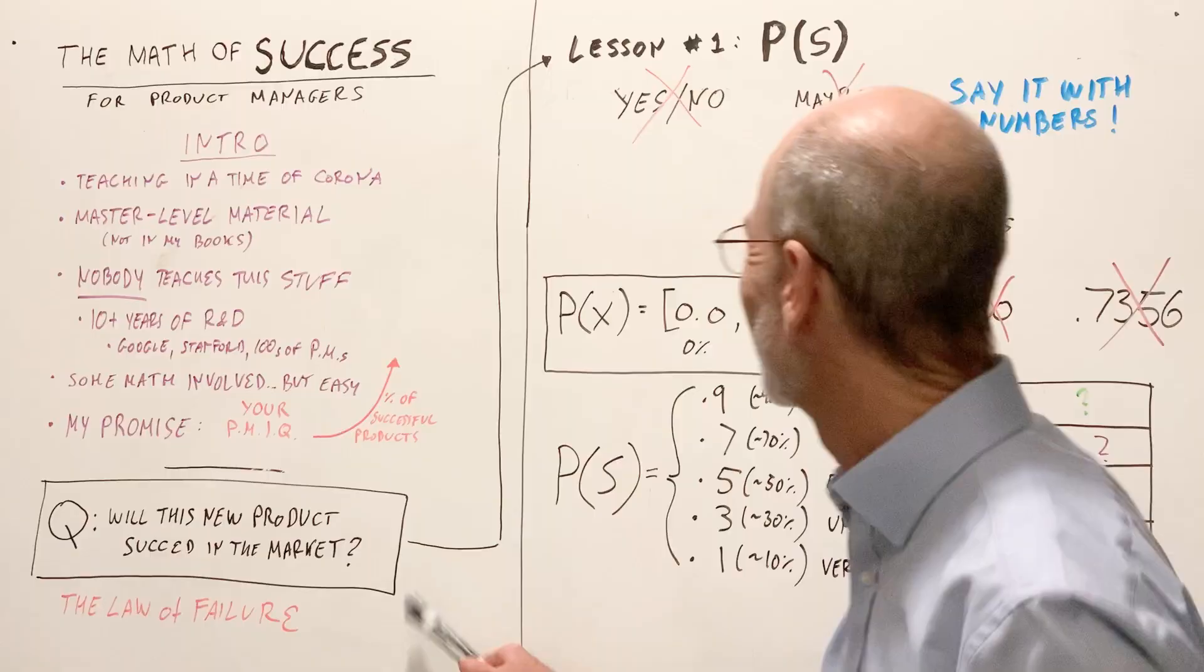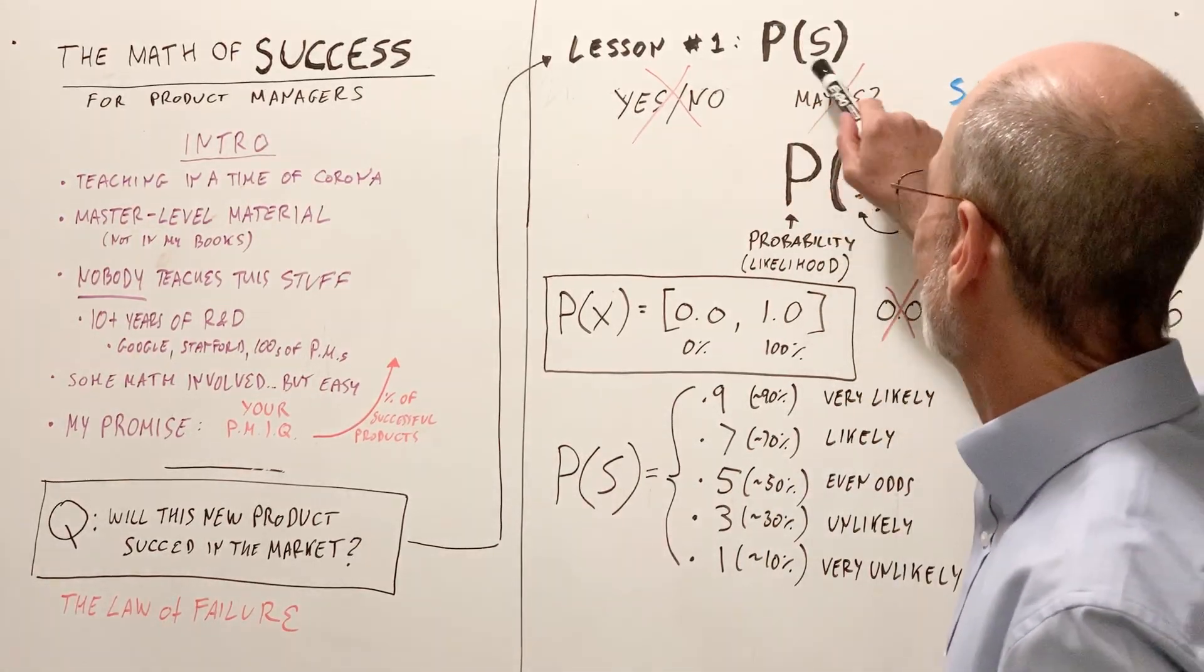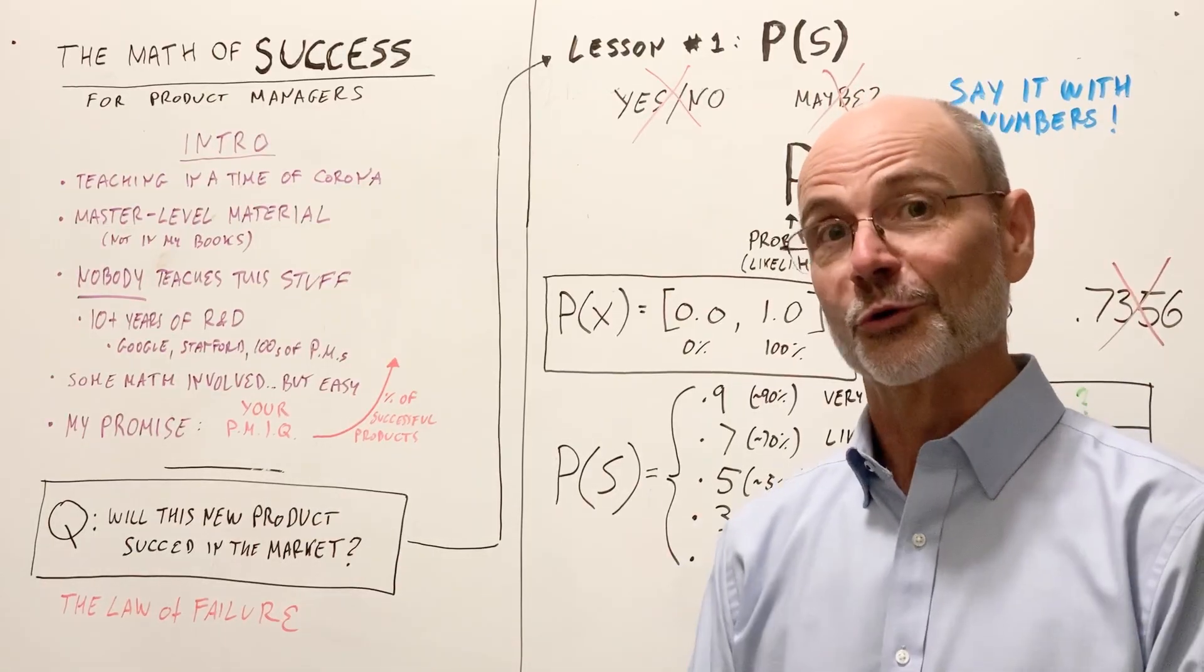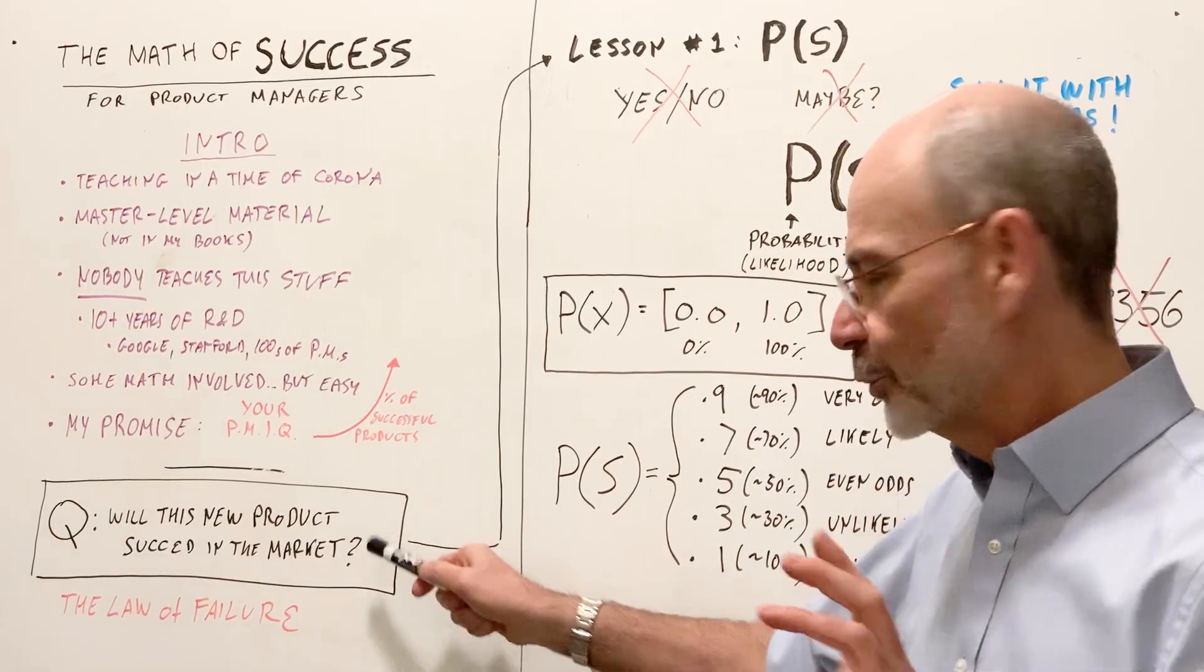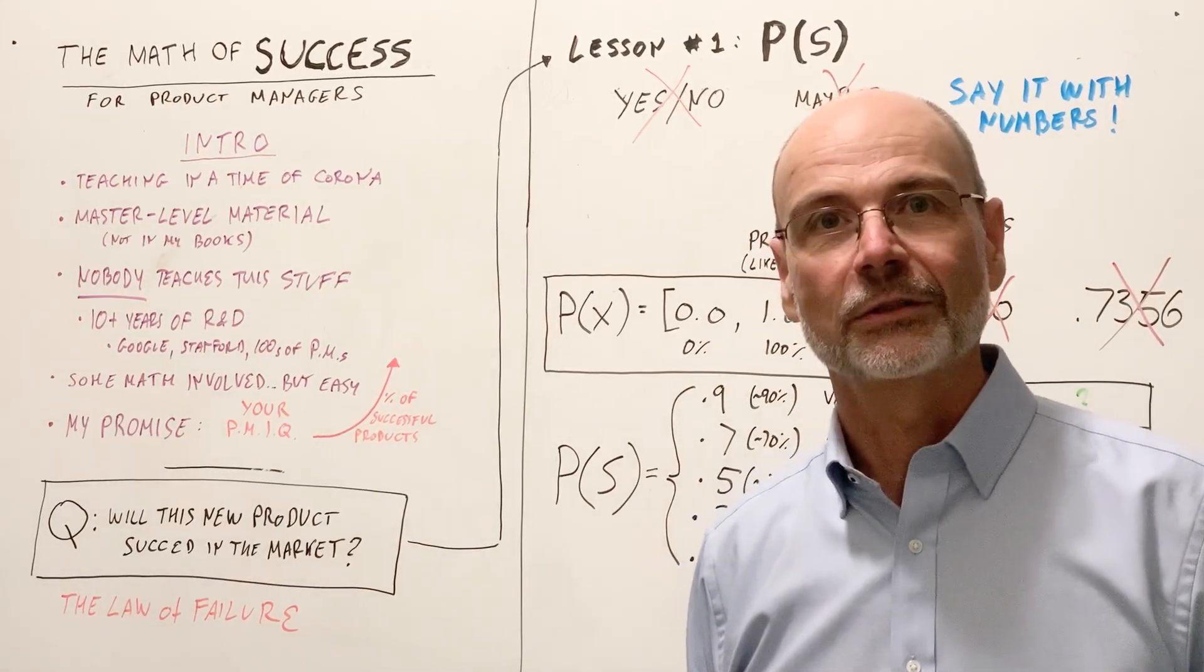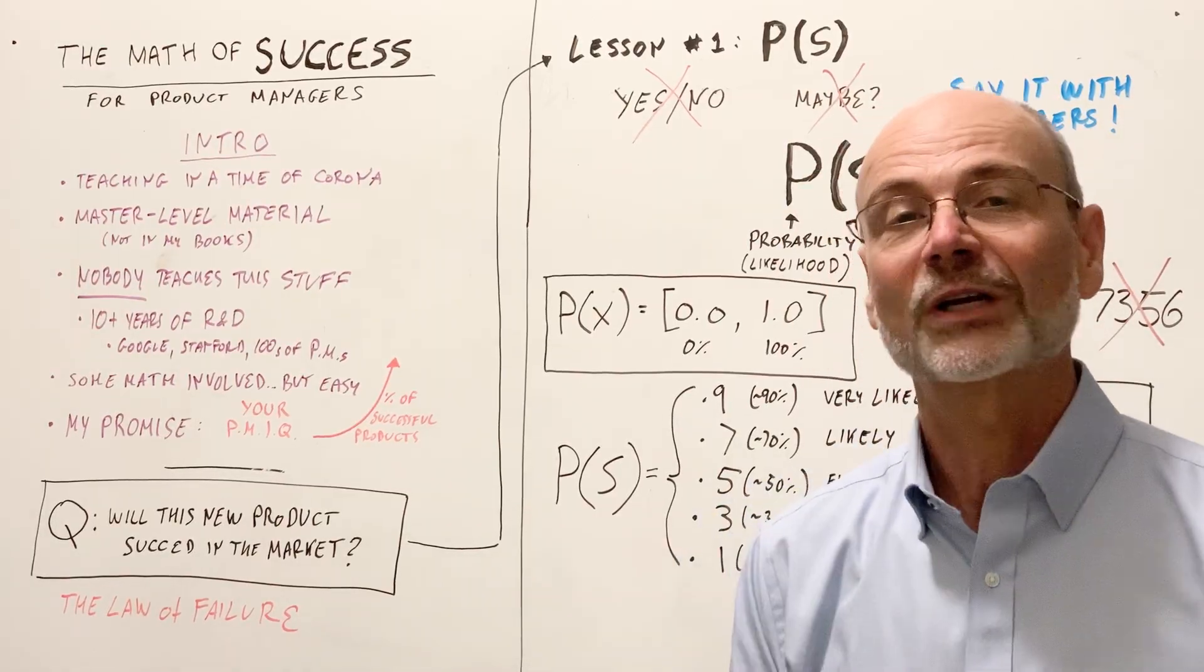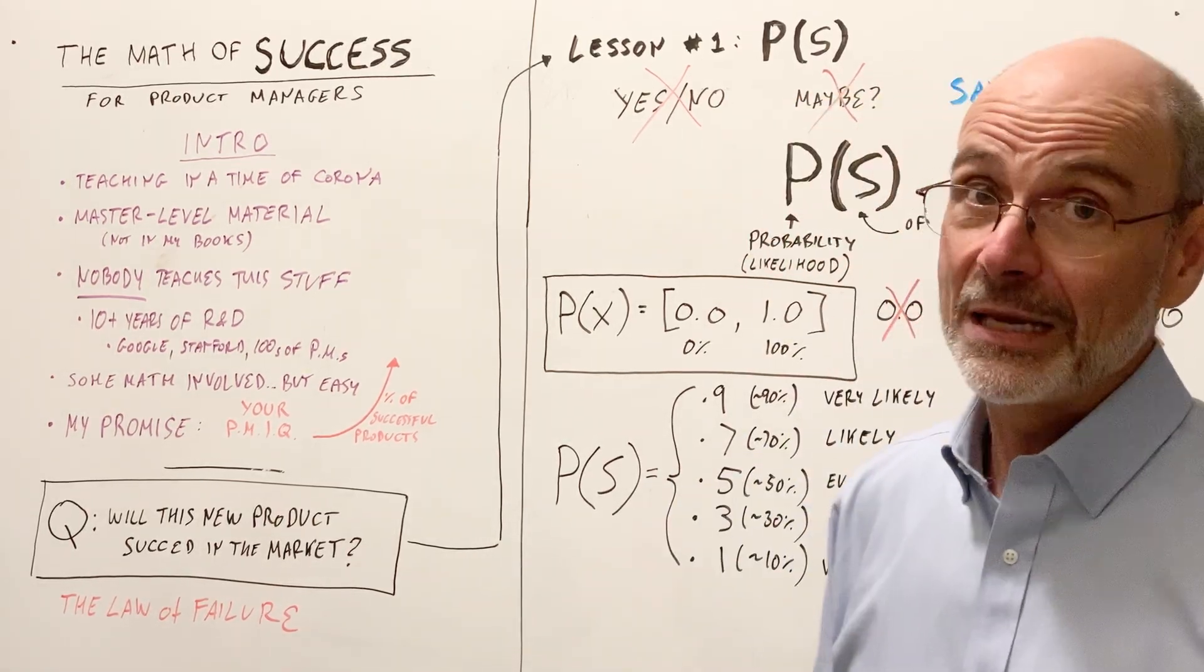This was my little intro. Let's get going to lesson one. Lesson one is titled P of S. P parenthesis S close parenthesis. What does that mean? P of S stands for probability of success. That's what this entire course is about. Because think about it. If this is the question, as a product manager, you want to answer this question, will this new product succeed in the market? You cannot give a yes or no question, right? This has a level of confidence that you're just unjustified. So you cannot say for sure it will not succeed. You cannot say for sure it will succeed. So you cannot do this.